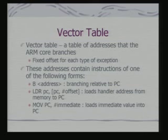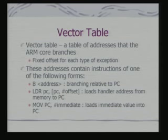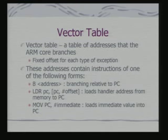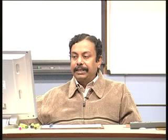But it is not always strictly that way, because the vector table — which is a table of addresses where the ARM core branches when an exception occurs — may not have space to put in the complete service routine in the table itself. So, in the table, you actually have a branch instruction. It can be explicitly a branch instruction, or it can be any other instruction which modifies PC, so that on execution of this instruction, control gets switched to the interrupt handler.